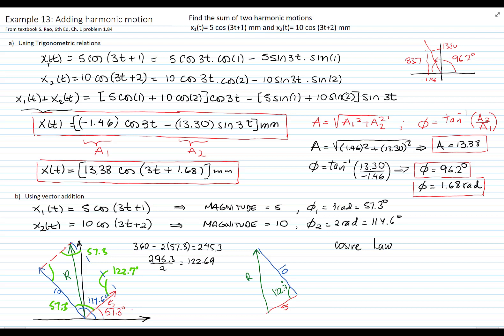So as you recall, r will be equals to the square root of 5 squared plus 10 squared minus 2 times 5 times 10, times the cosine of the opposite angle of the vector that I want to find. So r is equals to 13.38. As you see, we are getting the same results as before.